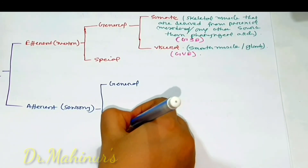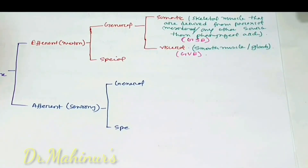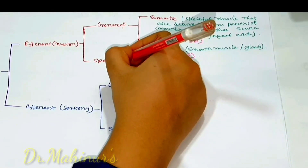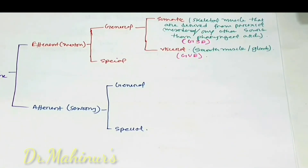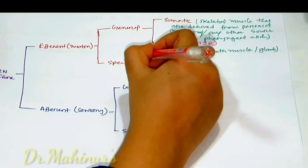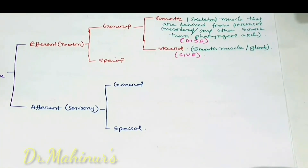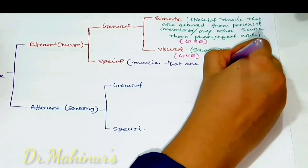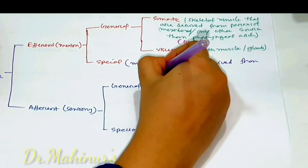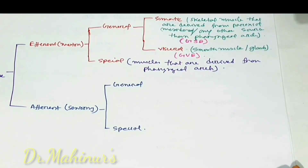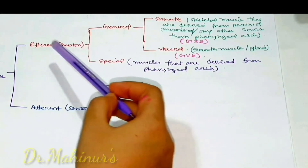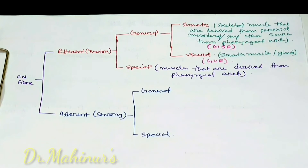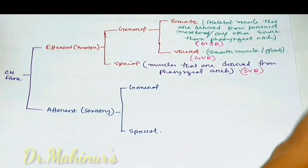Efferent fibers may also have a special component. When an efferent or motor cranial nerve fiber gives supply to muscles derived from the pharyngeal arch, we say that cranial nerve fiber has a special visceral efferent component.